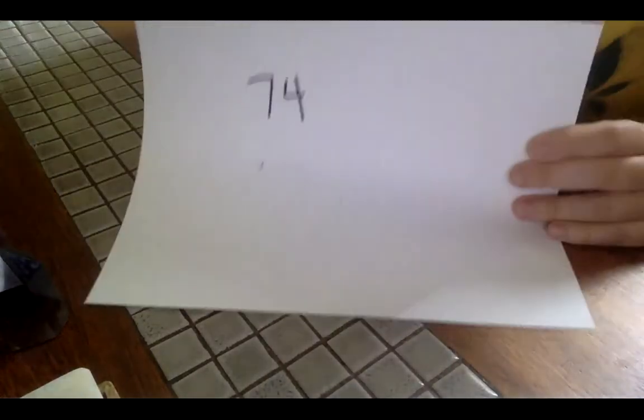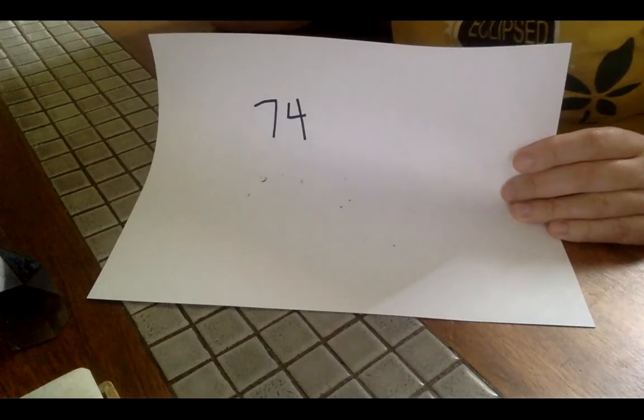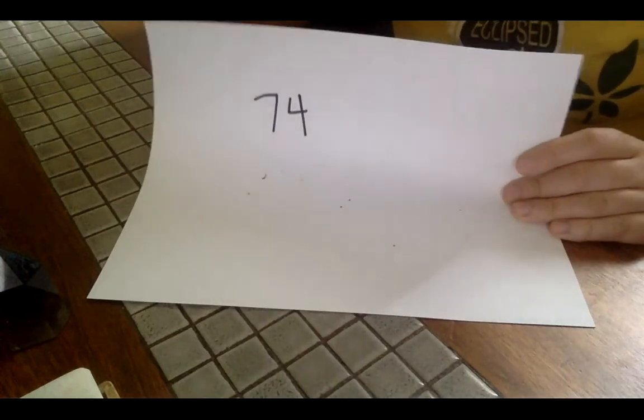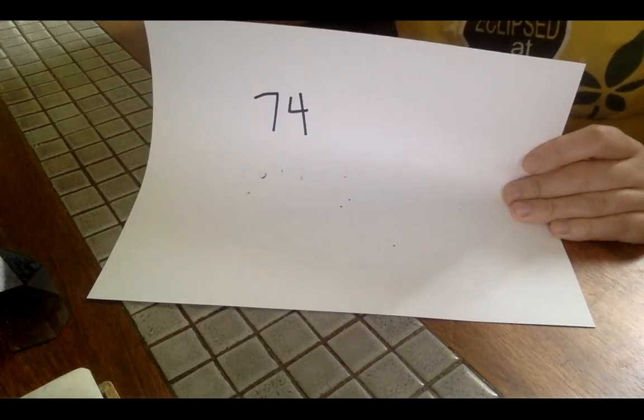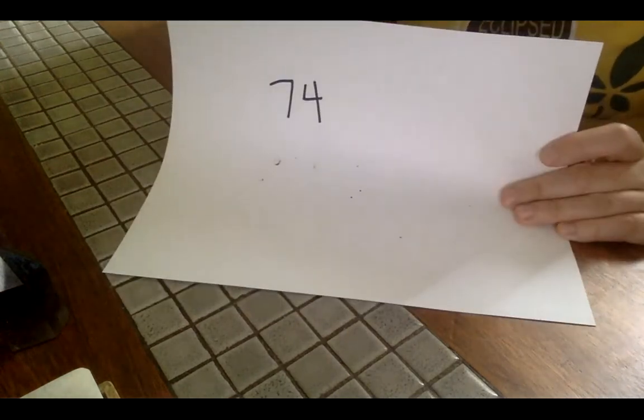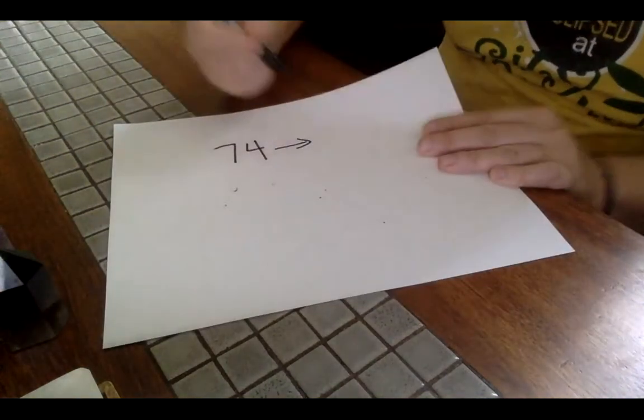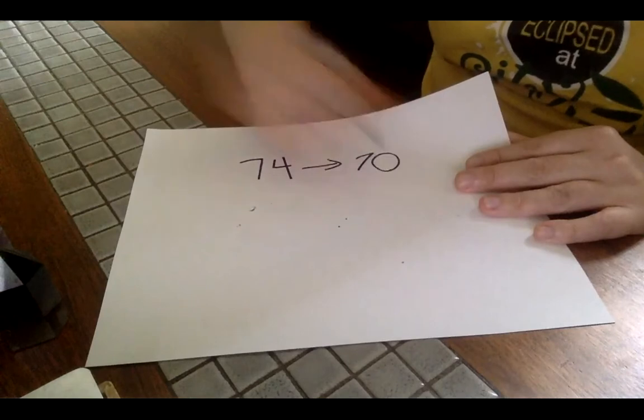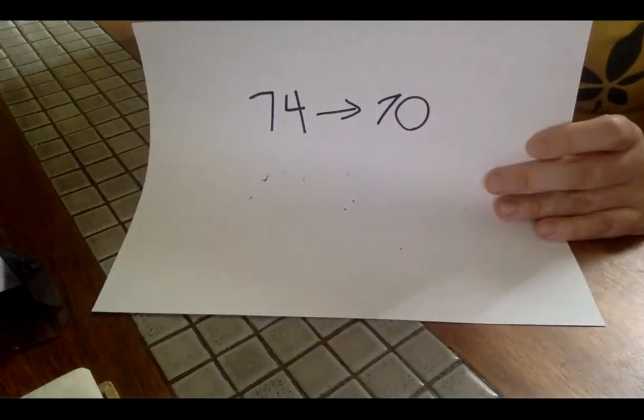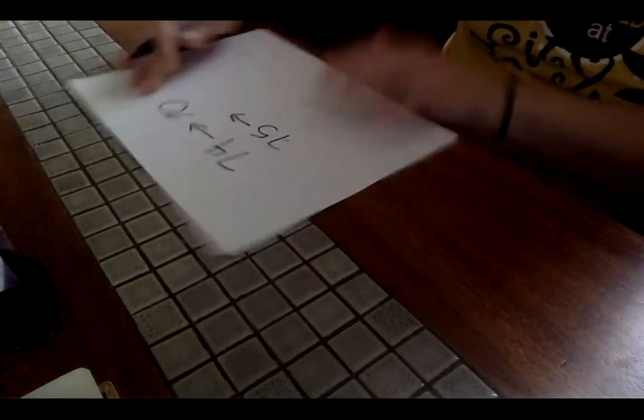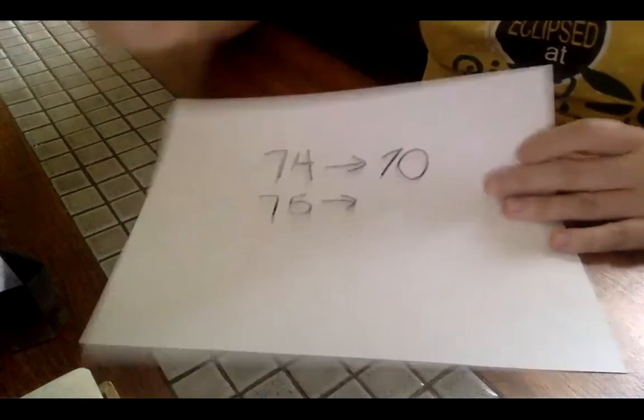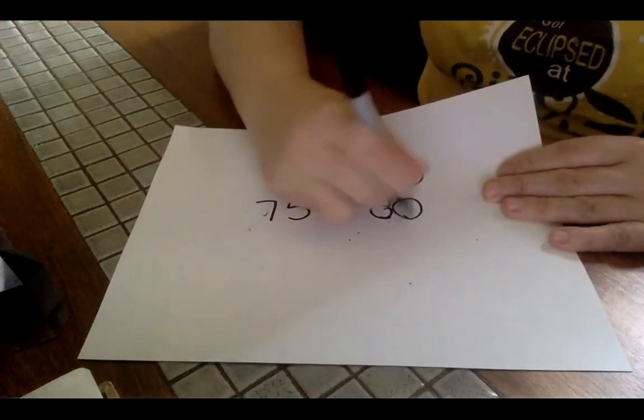You have 74. Are you going to stay on the floor, stay on the 70th floor, or are you going to round up to the 80th? Well, if you remember our rhyme, one through four, hit the floor. So 74 will stay at 70. 75, however, five through nine, it's going to round up to 80.